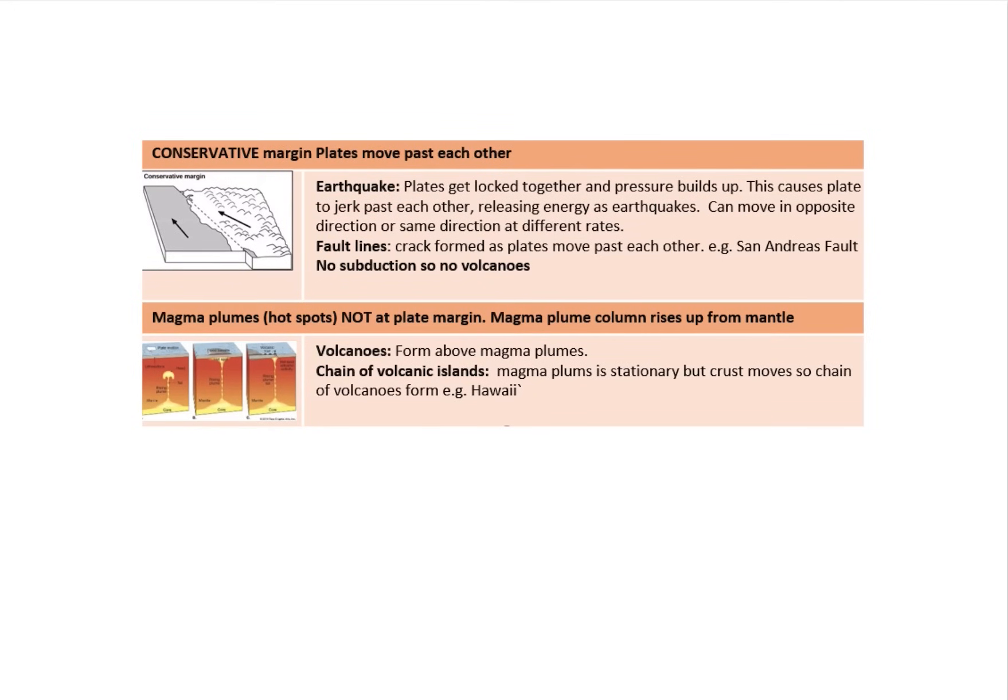Magma plumes or hot spots—remember, these aren't found at a plate margin. A magma plume column just rises up from the mantle, breaks through the plate, and cools, condenses and forms as a volcano, which can also lead to a chain of volcanic islands. Think of Hawaii here as your best example.